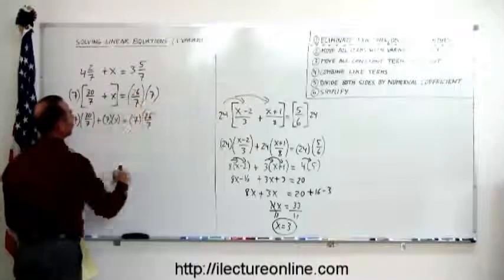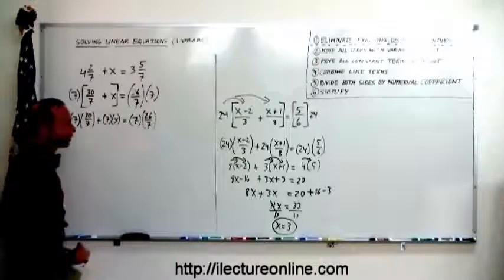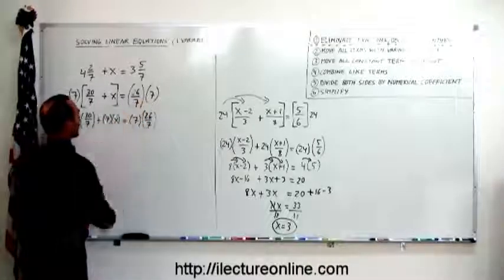Notice, if I write 26 over 7 times 7 or 7 times 26 over 7, it's the exact same thing. They call that the commutative property. When you multiply two numbers together, you can switch them around.